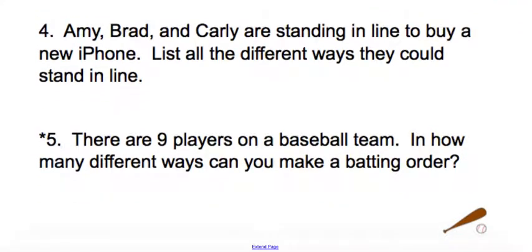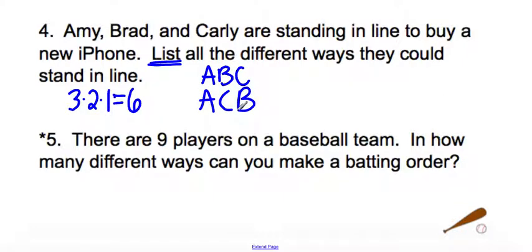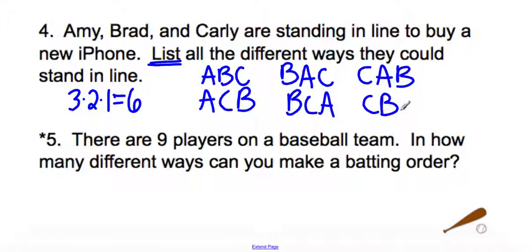Amy, Brad, and Carly are standing in line to buy a new iPhone. List the different ways they could stand in line. Now, if it were asking for how many ways can they stand in line, it would be 3 × 2 × 1, or three factorial, which is six. They actually want us to list them. So they could stand Amy, Brad, and Carly. Or they could stand Amy, Carly, and Brad. That's the only ways they can stand with Amy going first. Let's let Brad go first. So Brad, Amy, Carly, and Brad, Carly, Amy. And that's all the ways they can stand with Brad first. And now, Carly gets to go first: Carly, Amy, Brad, and Carly, Brad, Amy. So there's the six ways that they could actually stand.